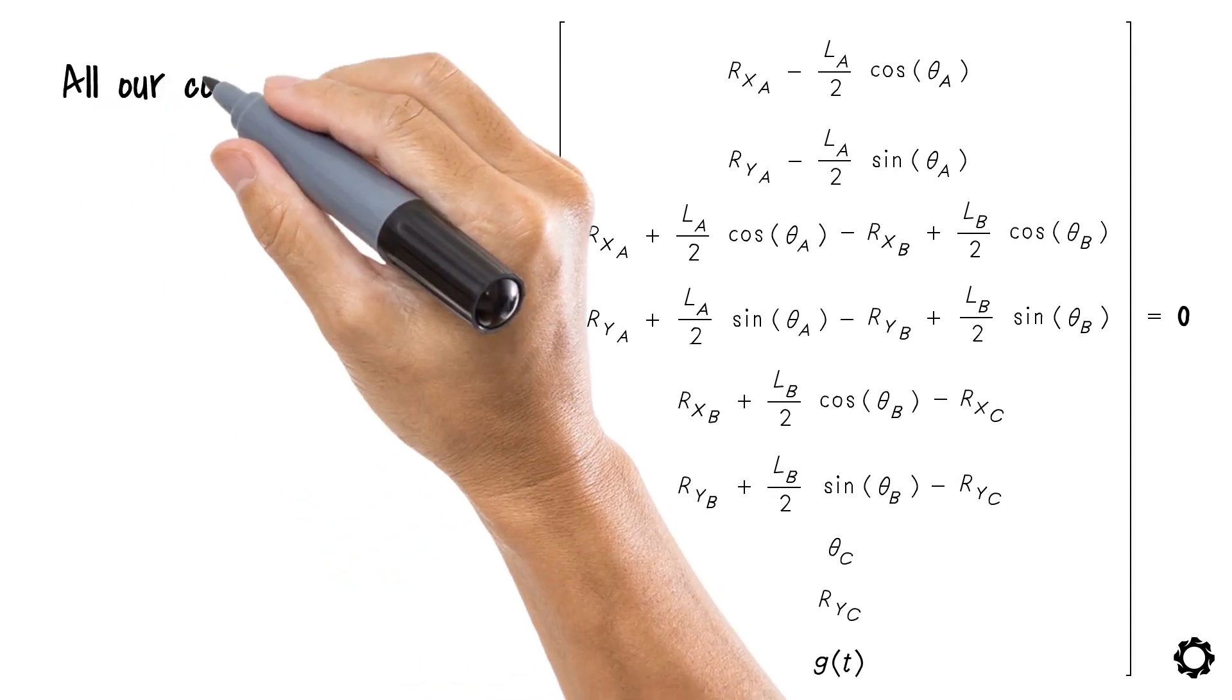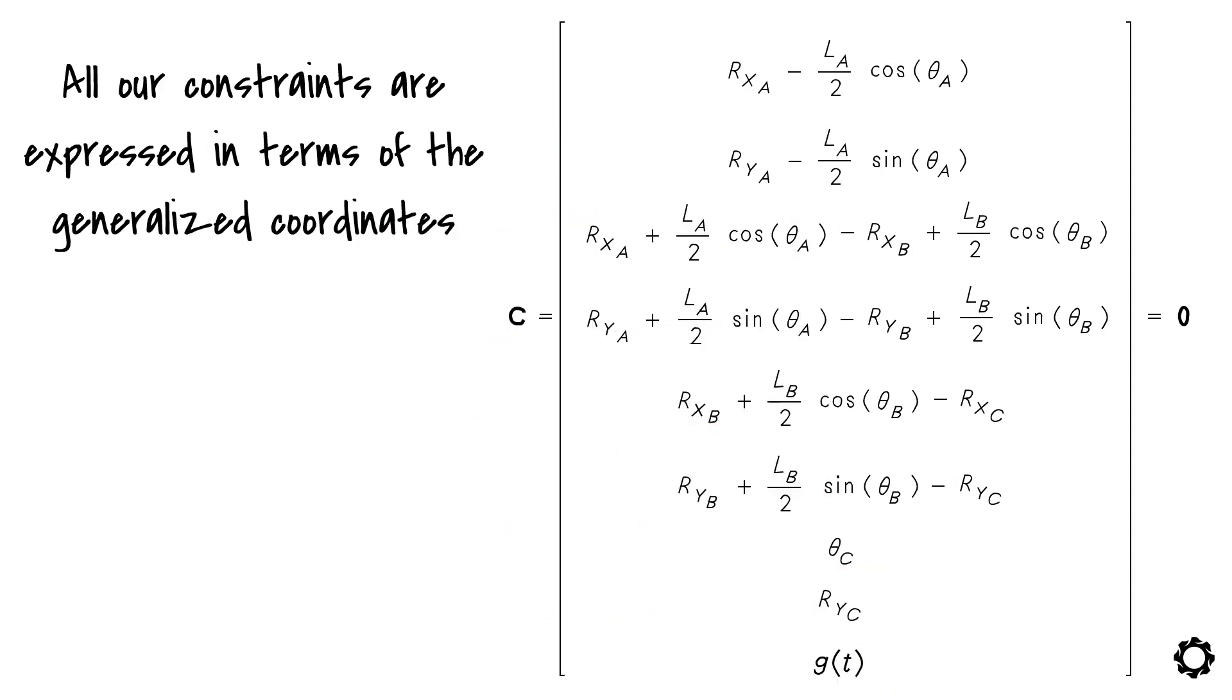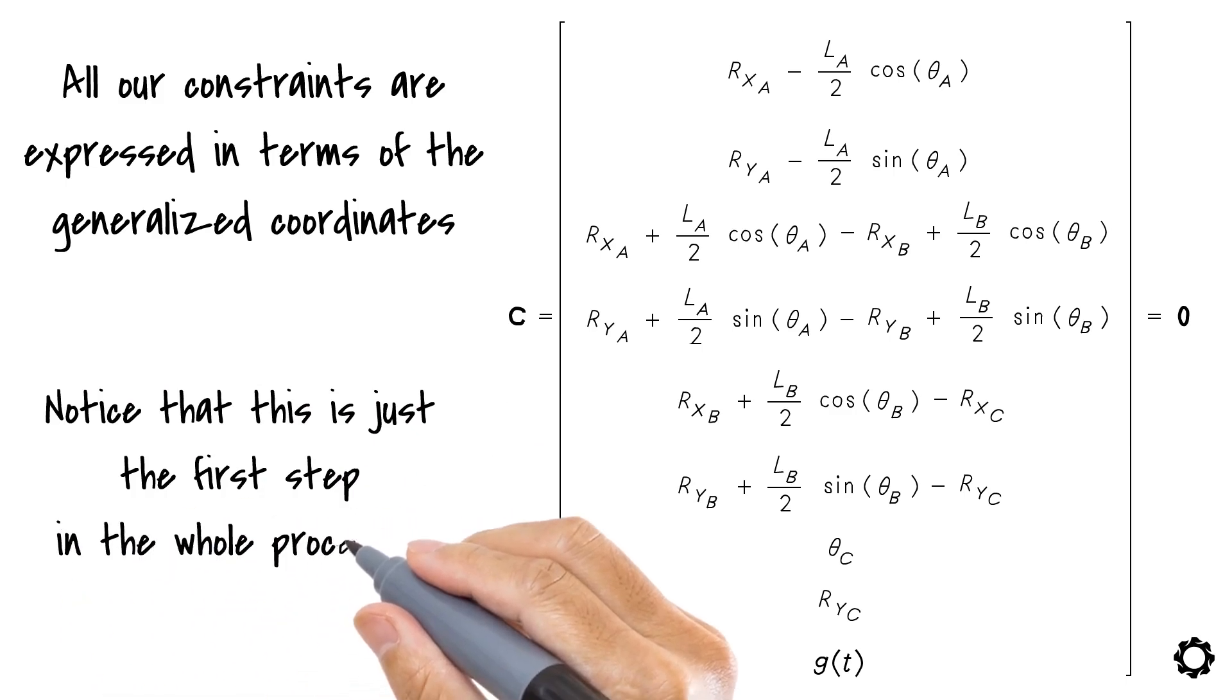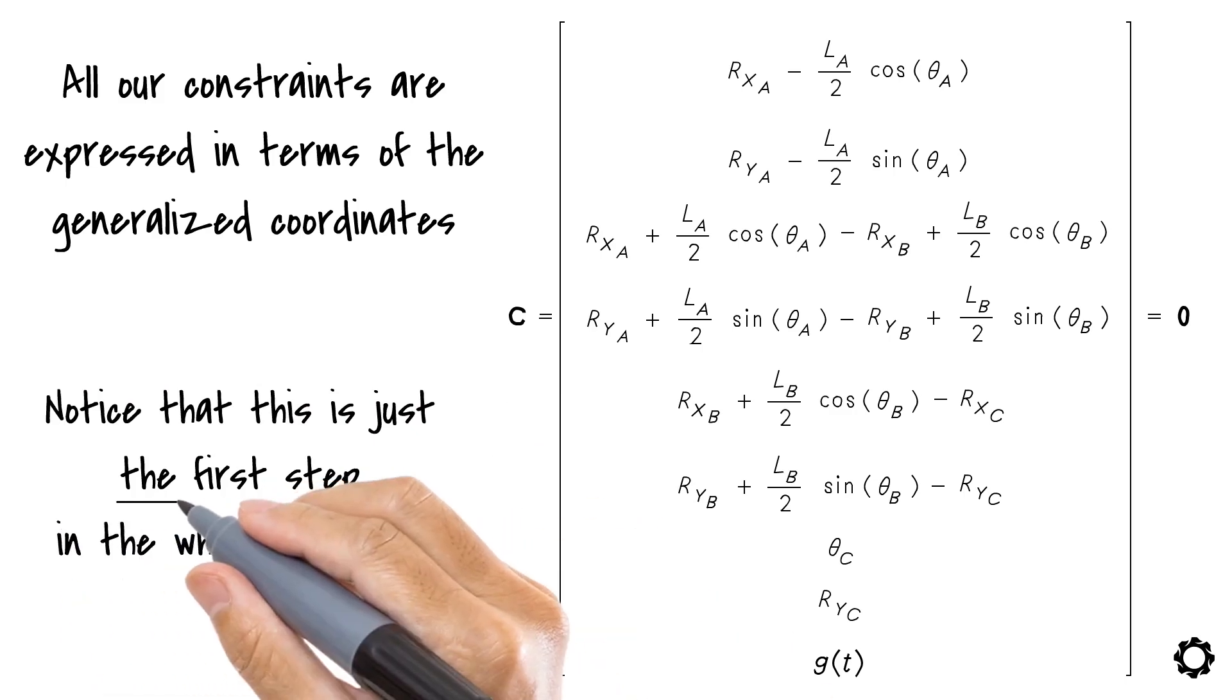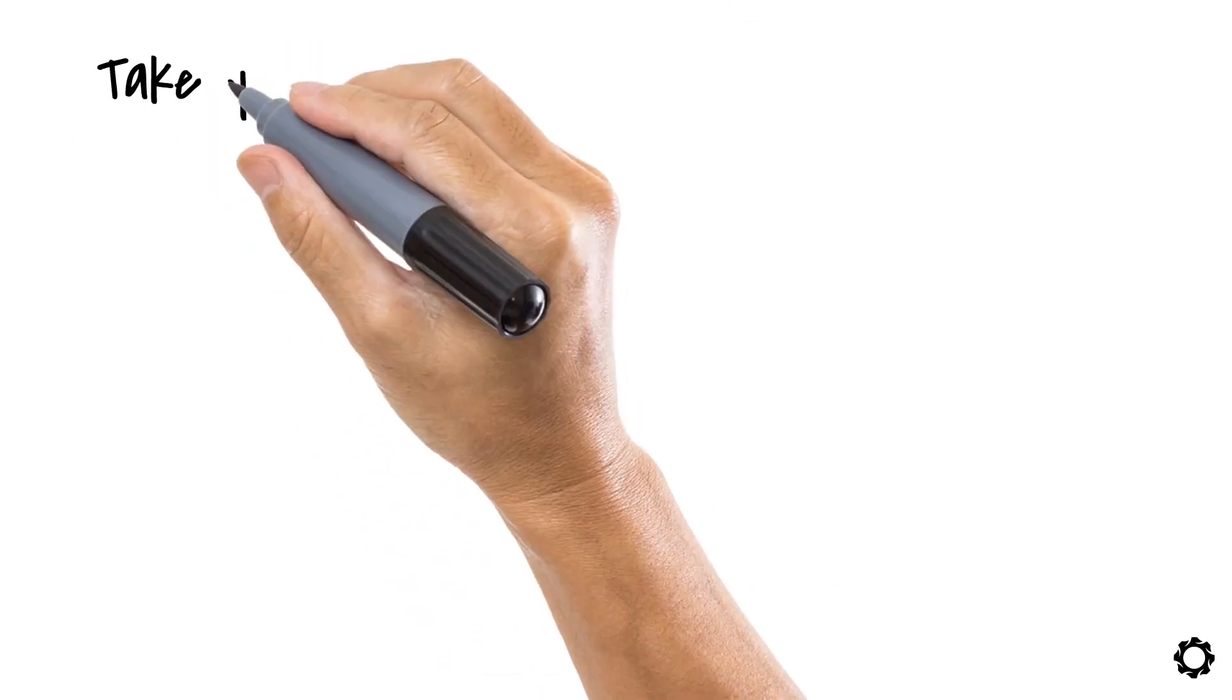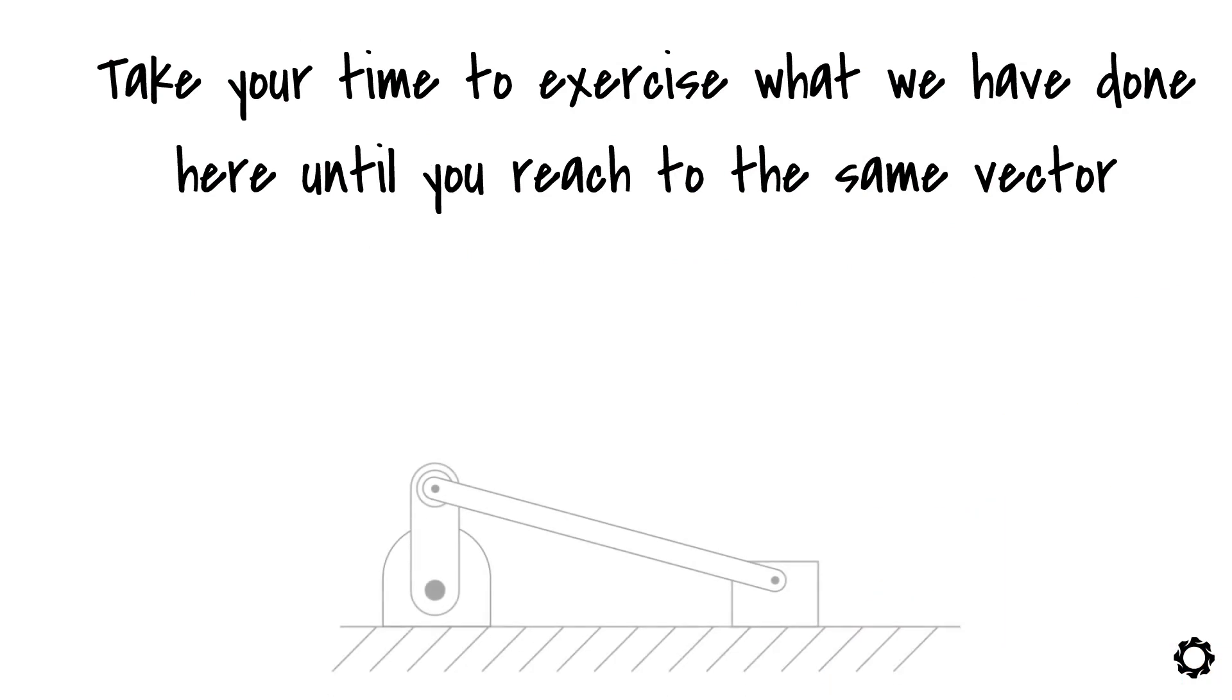Now, all our constraints are expressed in terms of the generalized coordinates. This is the way it looks. Please notice that this is just the first step in the whole procedure. This first step is of extreme importance and I would suggest that you take your time to exercise what we have done here until you reach the same vector for our mechanism.